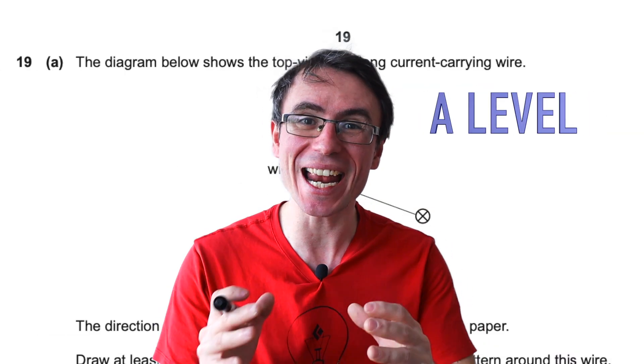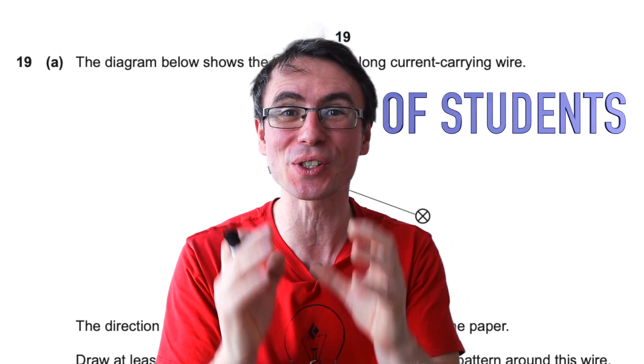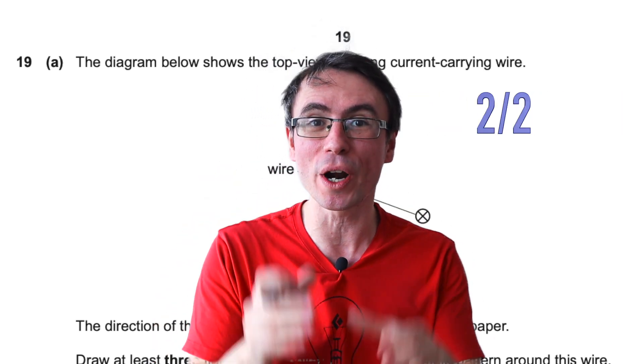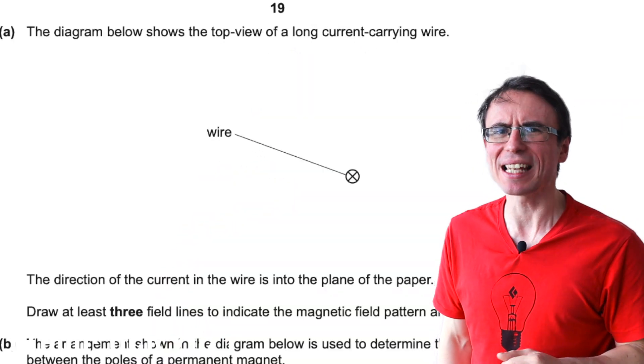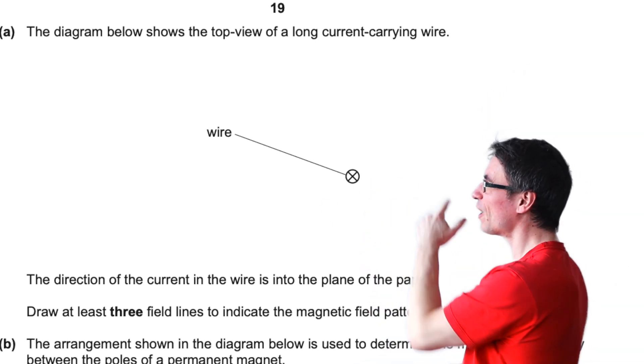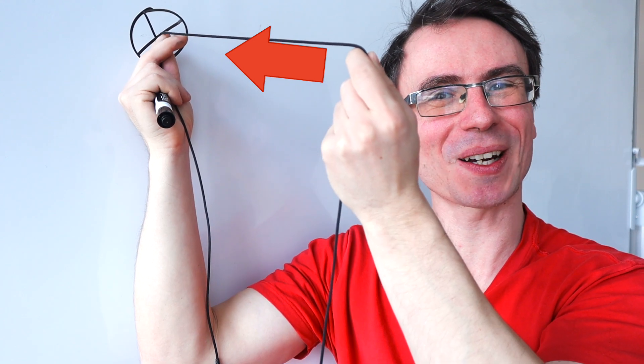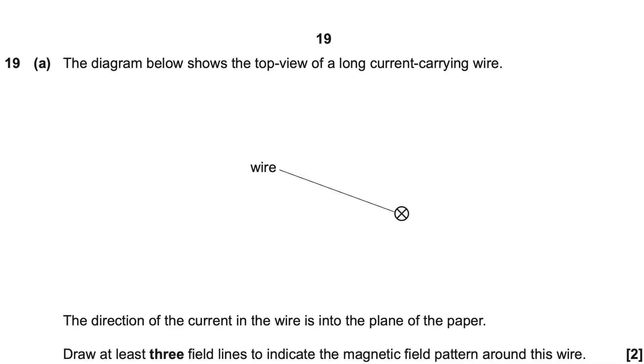In 2021, there was an A-level physics question in which only around 10 percent of students managed to score two out of two. The question was deceptively simple but it had a little trick. We have a wire with current that is going into the board. In other words, the current is in this direction. What we need to do is simply draw the magnetic field pattern around this wire.